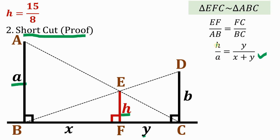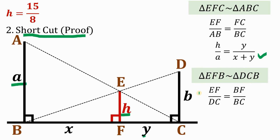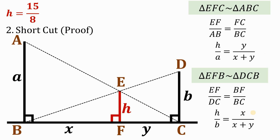Another key point is the similarity between triangle EFB and triangle DCB. If they are similar, we can say EF over DC equals BF over BC. So EF is H, DC is B, BF is X, and BC is X plus Y. Now consider these two results and add them. The right-hand side is (X plus Y) over (X plus Y), which equals 1.